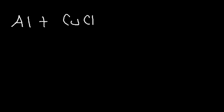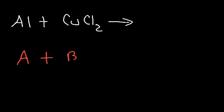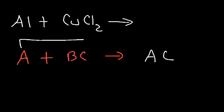When aluminum is placed in a solution of copper chloride, this is a single replacement reaction because we have a pure element mixed with a compound. In single replacement reactions, the pure element displaces one element from the compound. The general form is A + BC → AC + B, where A displaces B and pairs up with C. Single replacement reactions are always redox reactions.